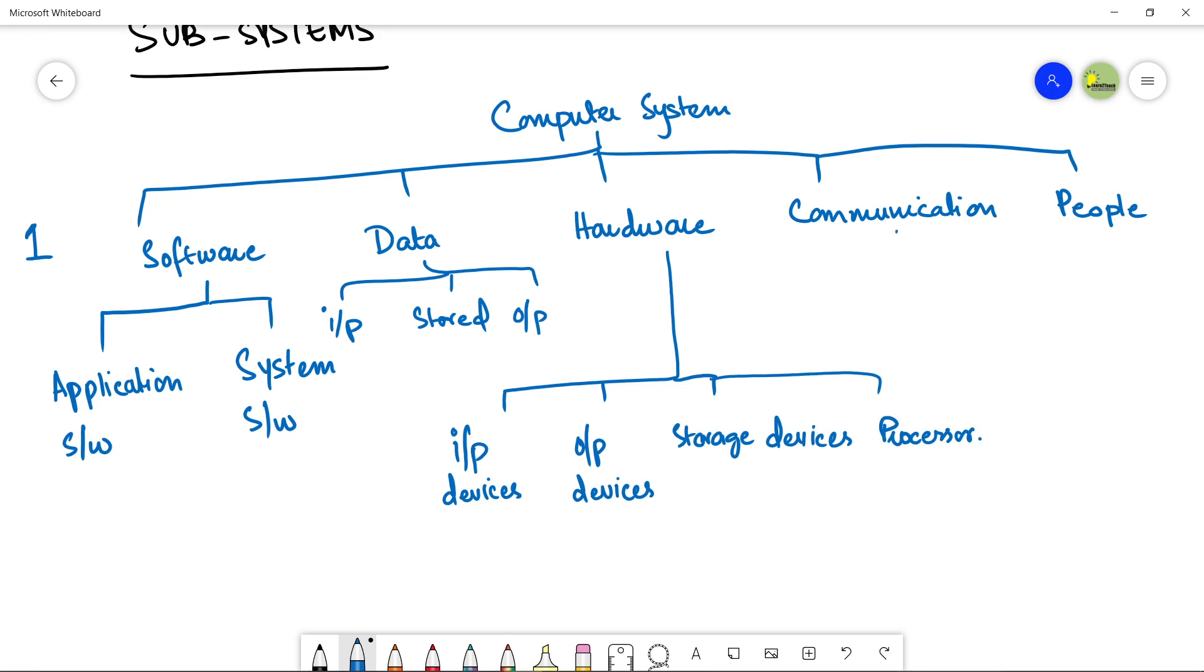Then we talk about communication. In the communication, we need three things. There is a transmitter that helps to transmit the data. Then you need a medium where you can transmit the data. And the third thing is your receiver. There must be a receiver that receives the data.